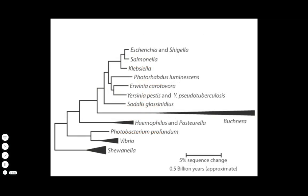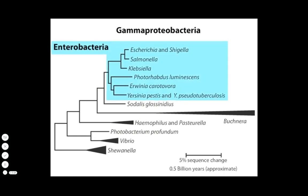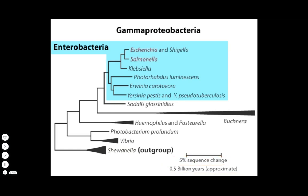This tree compares the relatedness of some gamma proteobacteria, including enterobacteria, which may grow in our digestive tract. For this tree, the outgroup is Shewanella, a lithotrophic soil bacterium. The sequence data can be combined with geologic fossil information to estimate times since two branches shared a common ancestor. For example, Escherichia and Salmonella diverged from a common ancestor about 80 million years ago.